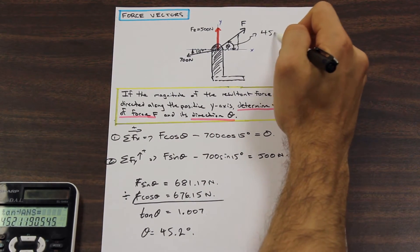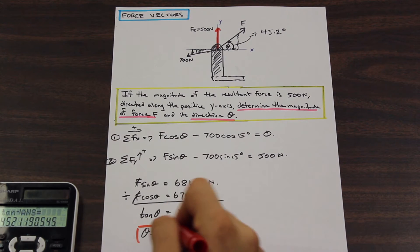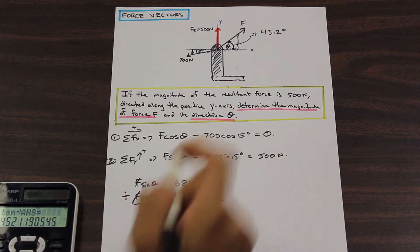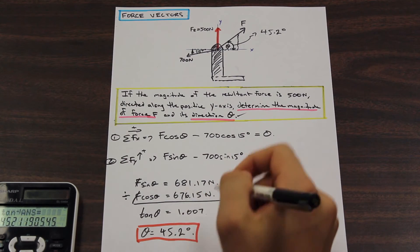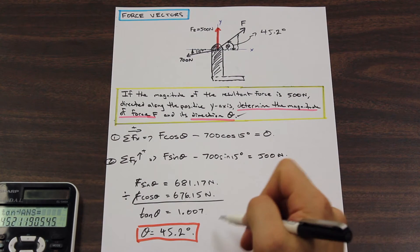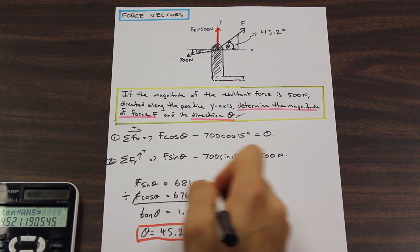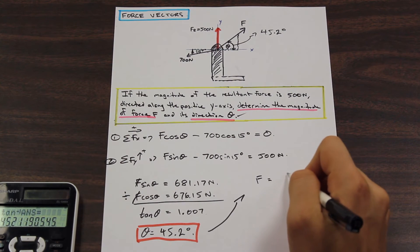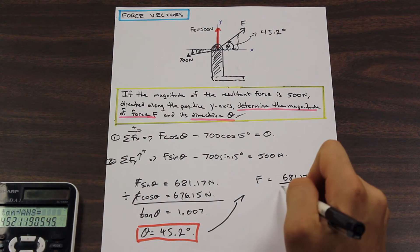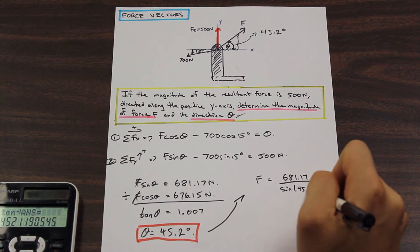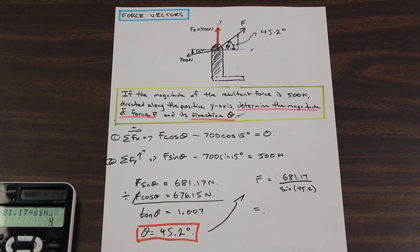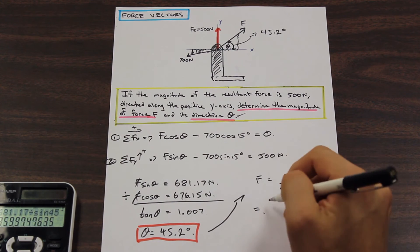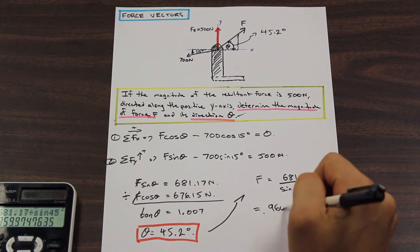So we now have theta equal to 45.2 degrees — that's the direction of the force. The final step is to take this angle and plug it into either equation to get the magnitude of force F. So F equals 681.17 divided by sine 45.2 degrees, and if we calculate that, we get approximately 959.9, which rounds up to 960 newtons.